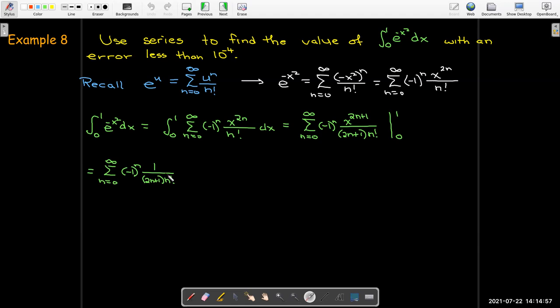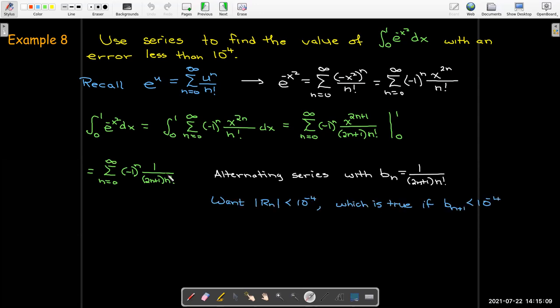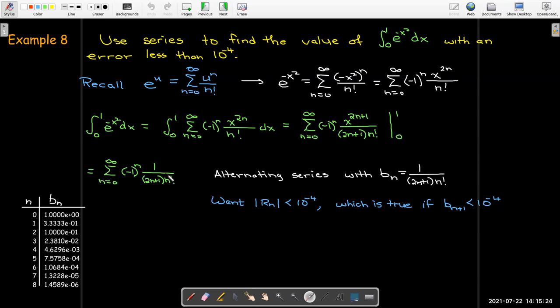But we're asked to find an approximation which has an error smaller than 10 to the minus 4. So let's take advantage of the fact that this is an alternating series. If I want my residual to be less than 10 to the minus 4, I just need to have this b sub n plus 1 be less than 10 to the minus 4.